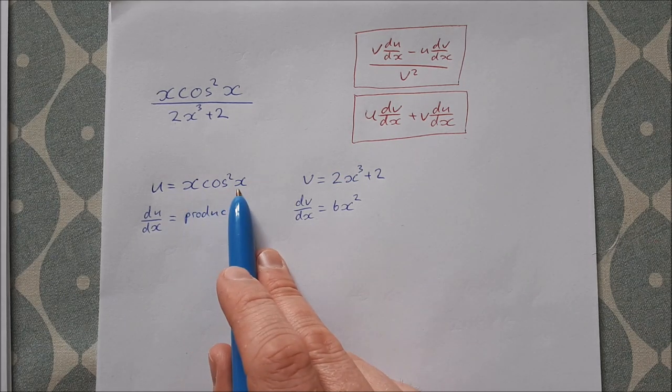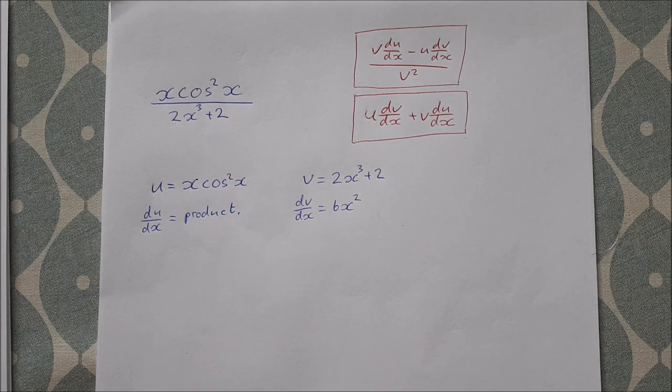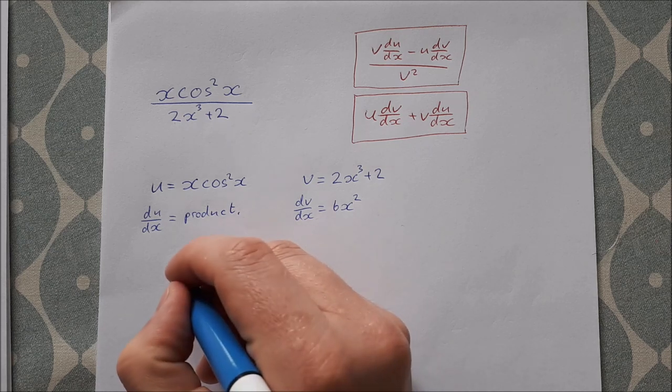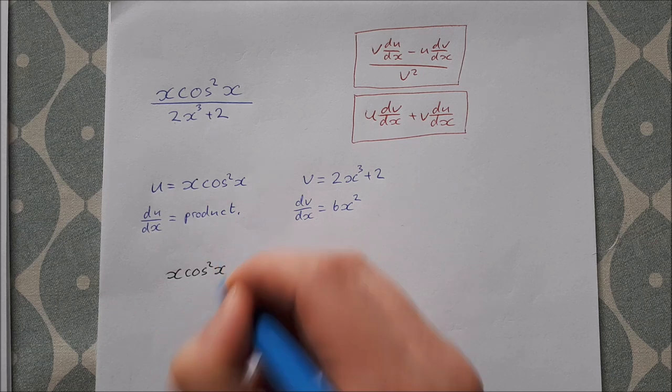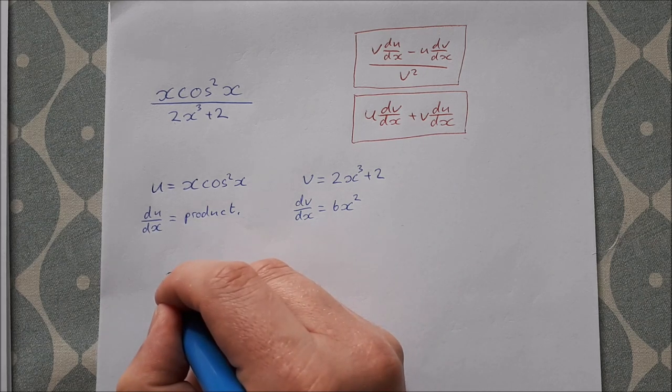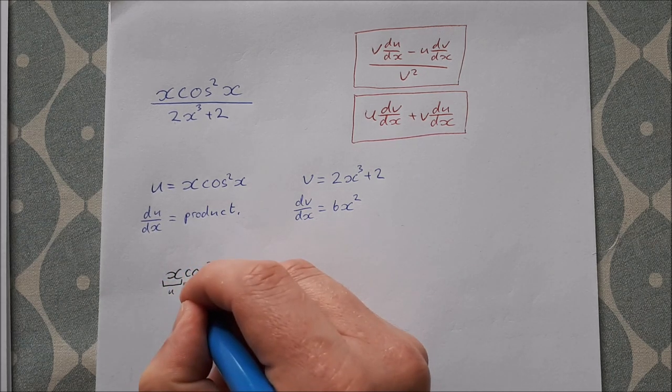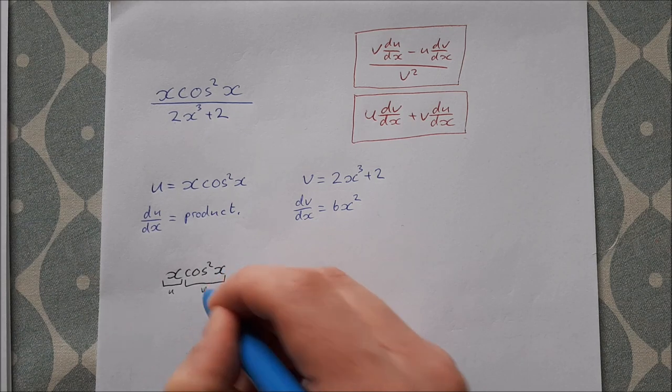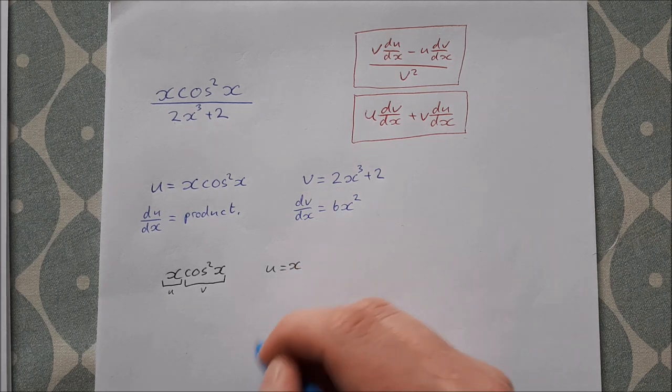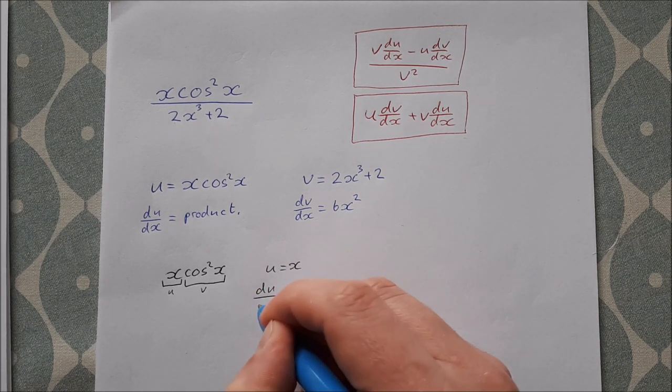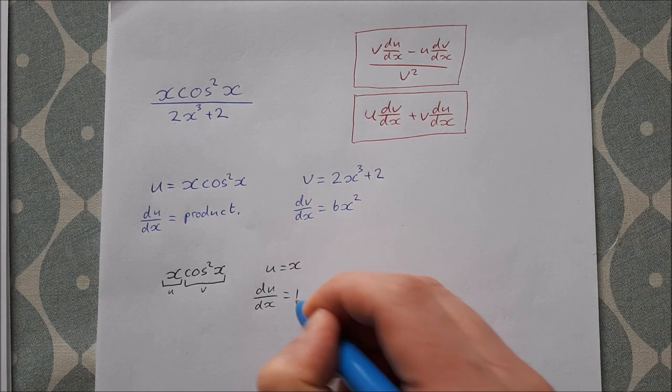We have x times cos²x, so that's a product rule. So I'm going to have to differentiate this separately. So let me take that down here: x cos²x, it's a product rule. That's u and that is v. So let's use the product rule now. u is equal to x, so du/dx is equal to 1.